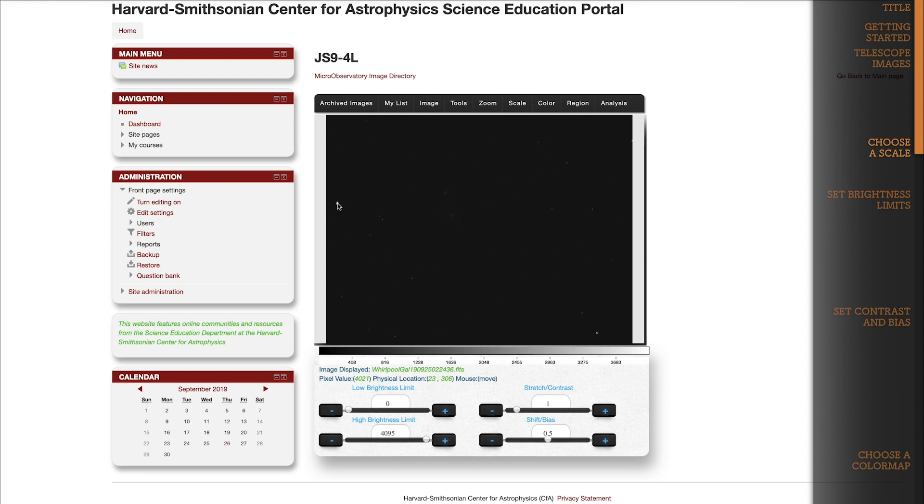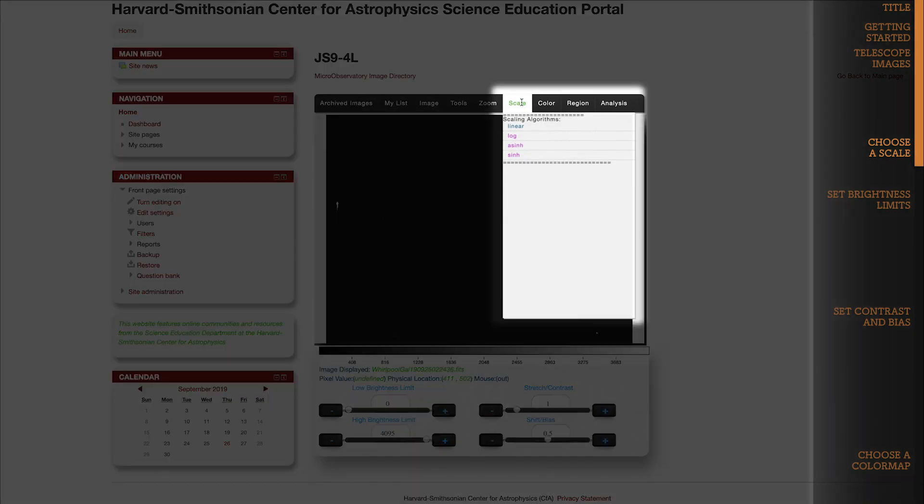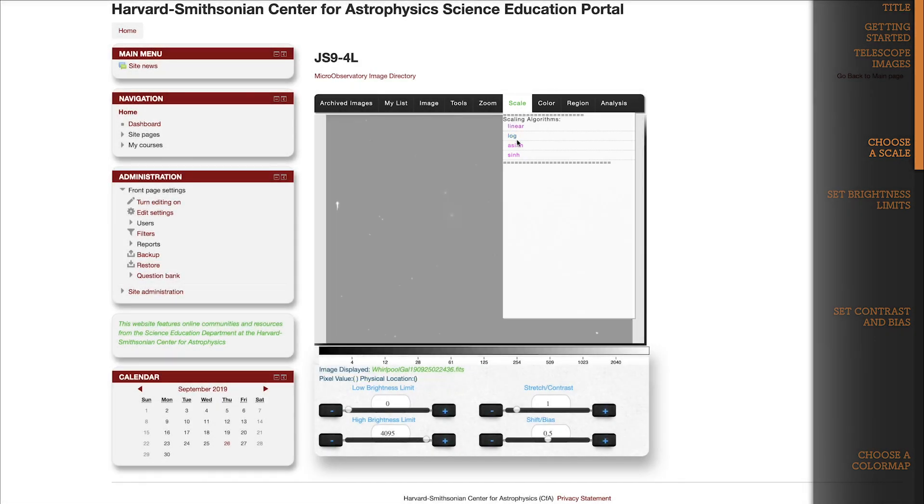For very dim objects, like the Whirlpool Galaxy, we usually want to switch to logarithmic scale, or log. The log scale favors very dim objects, particularly those that aren't much brighter than the background sky. To change our scale to log, I'll go up to the scale dropdown menu and choose log, like so. See how that enhanced all the detail that used to be too dim to see?